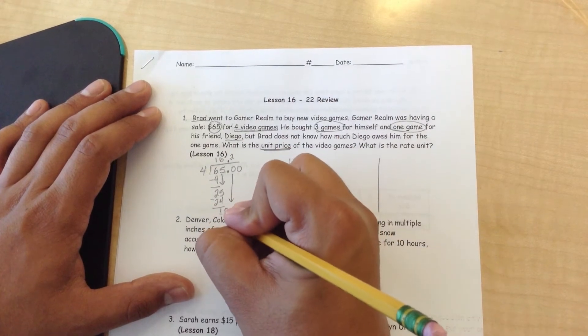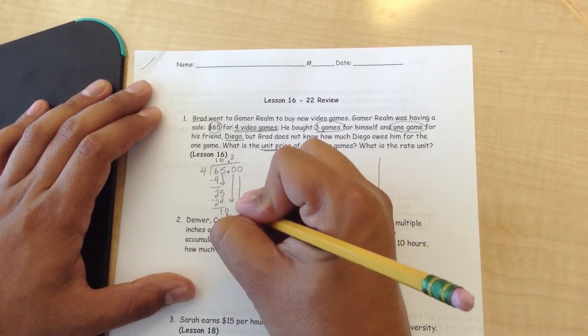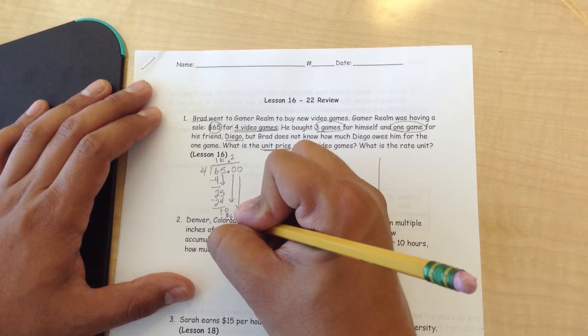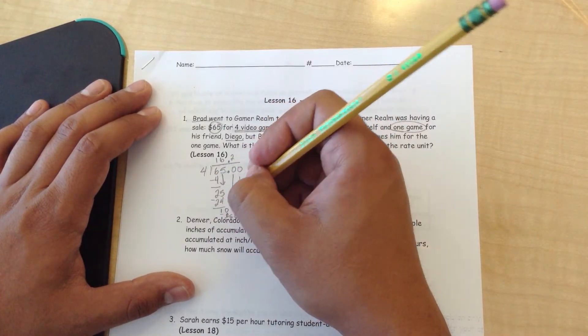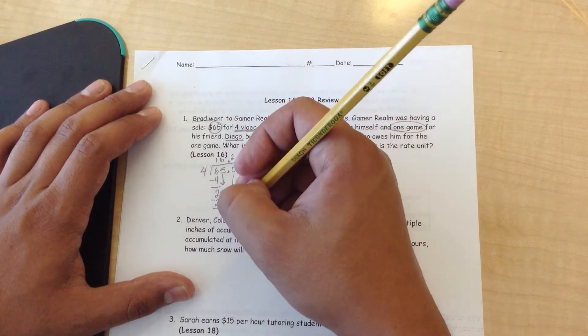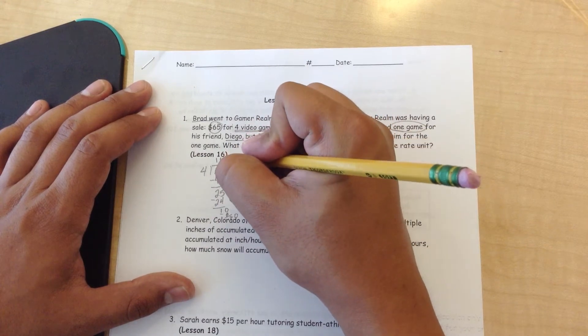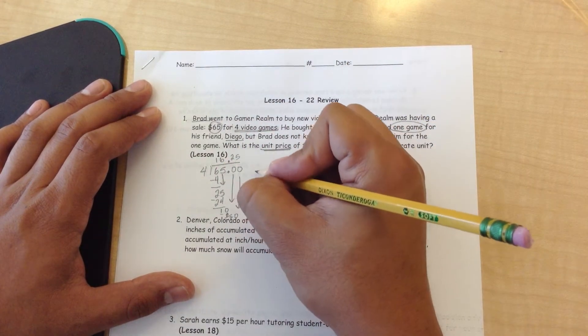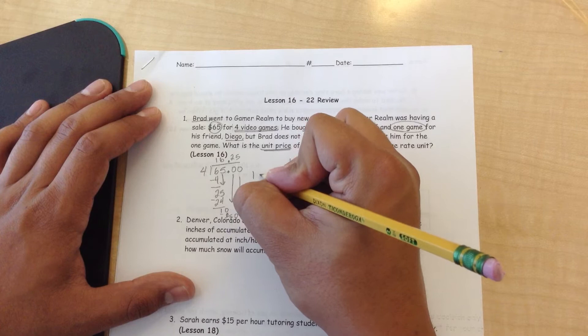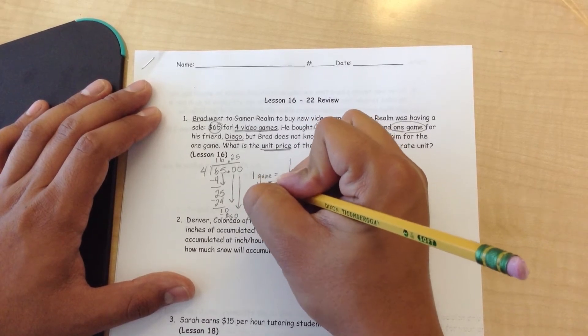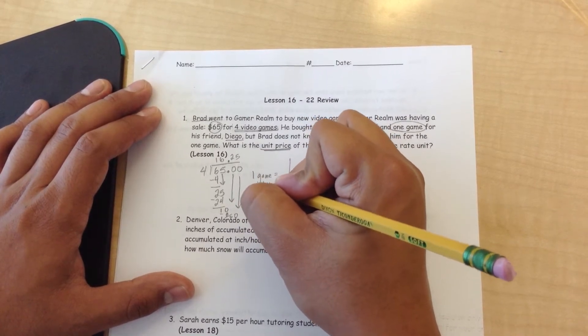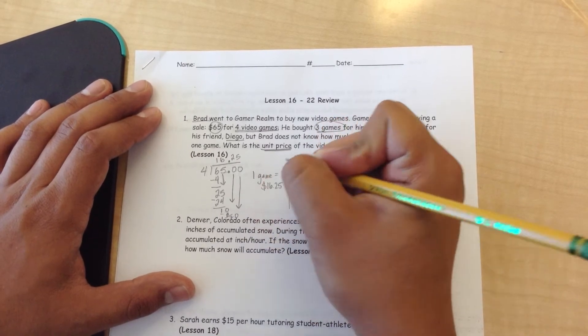Four goes into ten two times, eight. Ten minus eight is two. Bring the zero down. So 20, four goes into 20 five times, so we know that one game equals $16.25.